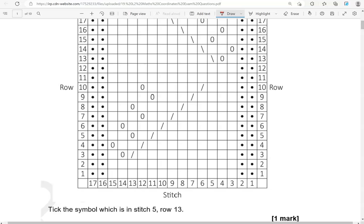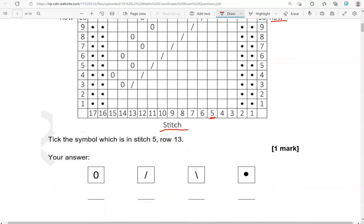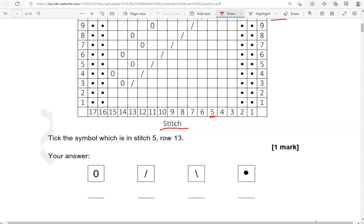So, stitch 5, that's 1, 2, 3, 4, 5, row 13. So, that's the row. Thirteen is here. So, across, where do they meet? That's this one here. It's a backward slash, which is this one.